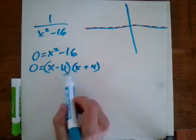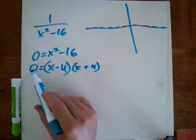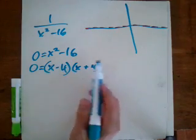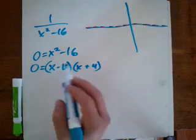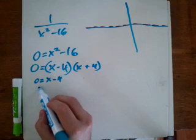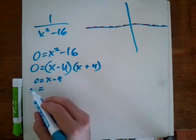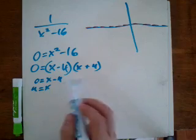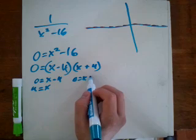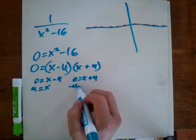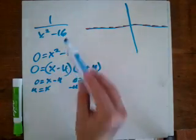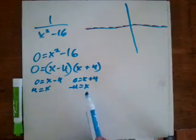Because these are multiplied together, we say that either (x - 4) equals 0 or (x + 4) equals 0, because anything times 0 is 0. Setting each equal to 0: from (x - 4) = 0 we get x equals 4, and from (x + 4) = 0 we subtract 4 and get x equals negative 4. So the denominator is going to be equal to 0 when x equals 4 and x equals negative 4.